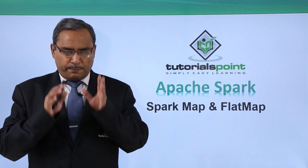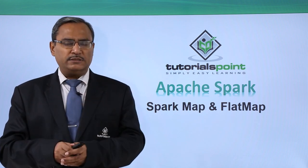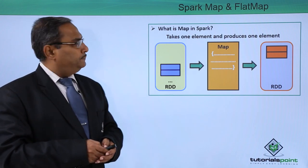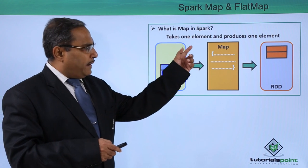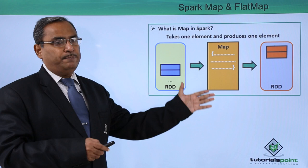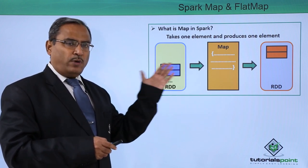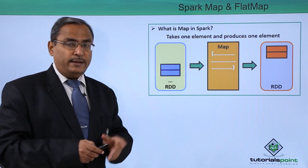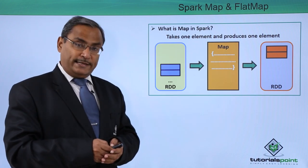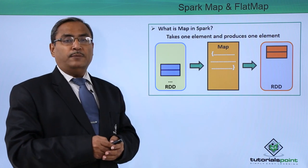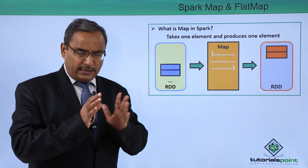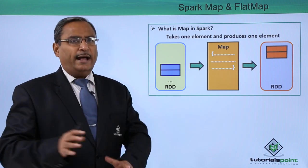Now let us concentrate on map and flat map operations on RDD. What is map in Spark? It takes one element and produces only one element — that is the main difference between map and flat map. In case of map, it takes one element as input and produces only one element as output. In case of flat map, it takes one element as input and it can produce zero, one, or multiple elements as output.